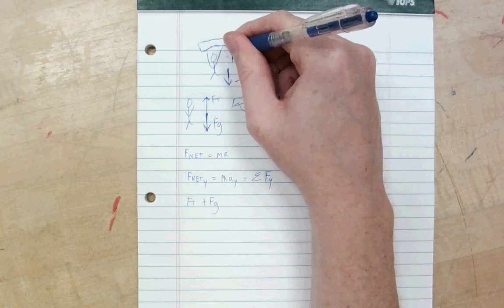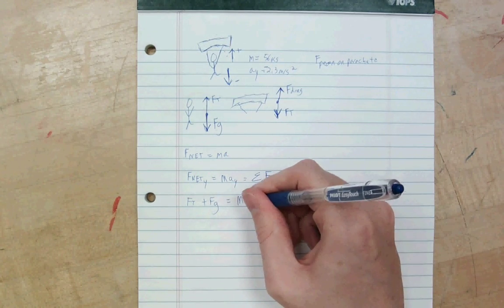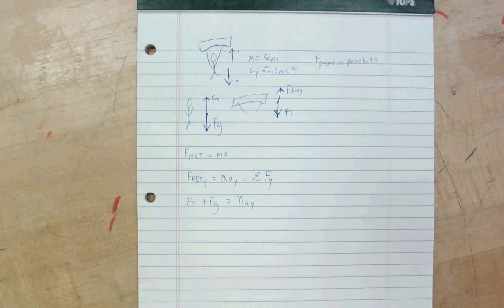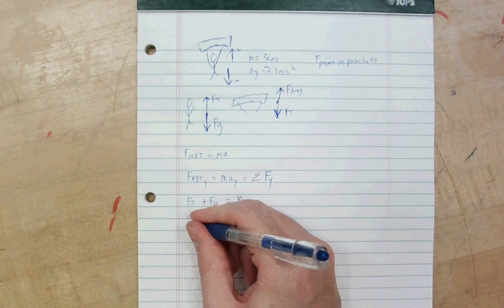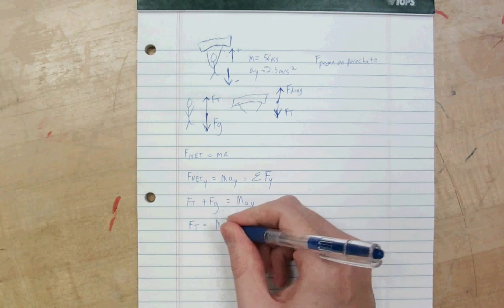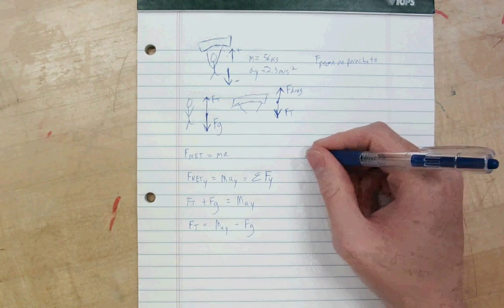So, down is negative and up is positive. We'll say that's M A y. Well, we don't know what the tension force is. We're trying to find that. So, let's go ahead and solve this equation for it. M A y minus F g. Okay, I need F g.